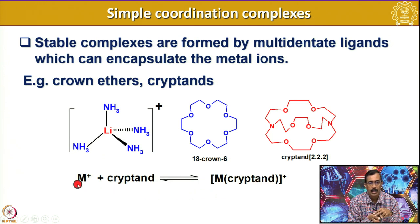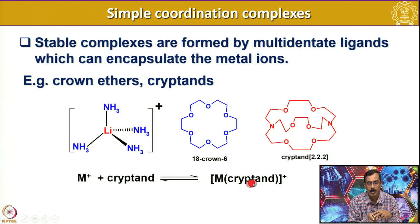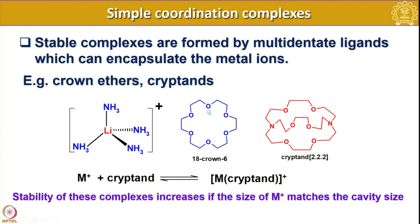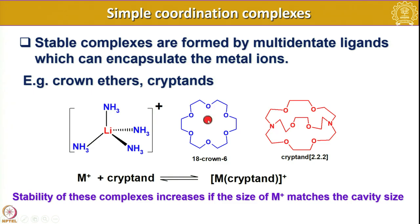Even if you have other hard ligands in the coordination sphere of the cation, the moment you add the cryptand, because of encapsulation an entropically driven reaction happens and these macrocyclic ligands encapsulate the metal to form a stable compound. The stability of these complexes increases if the size of M+ matches the cavity of the crown ether or cryptand chosen. One has to be extremely careful in knowing the size of the metal and the cavity, because if the cavity matches well with the cation it becomes very difficult to dislodge the metal centre.